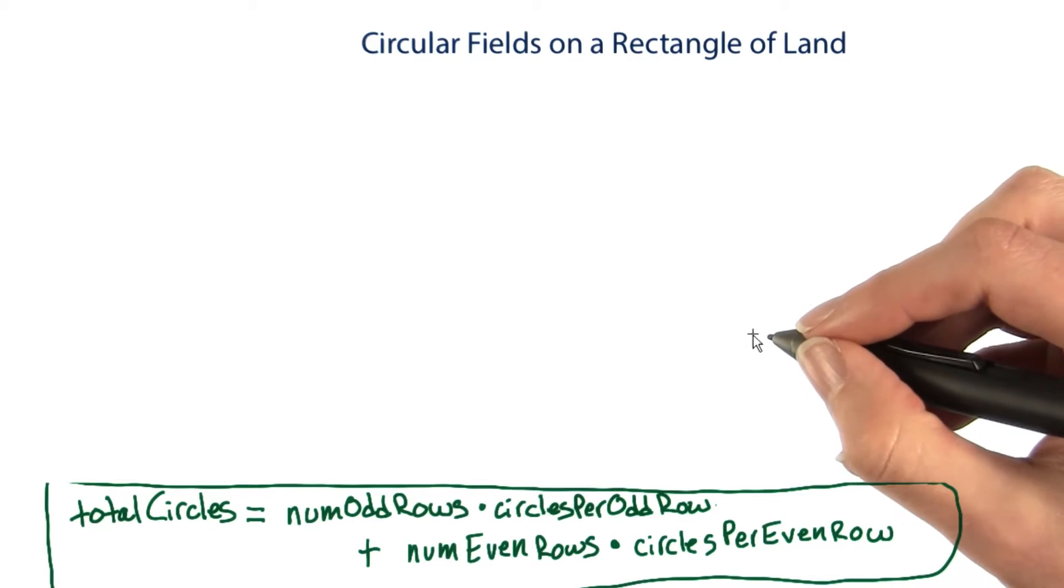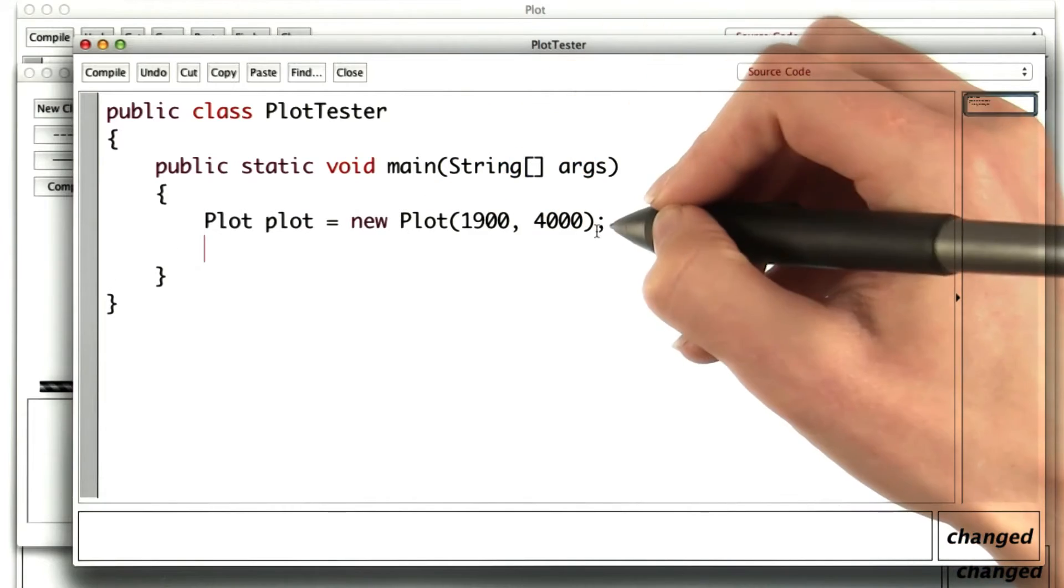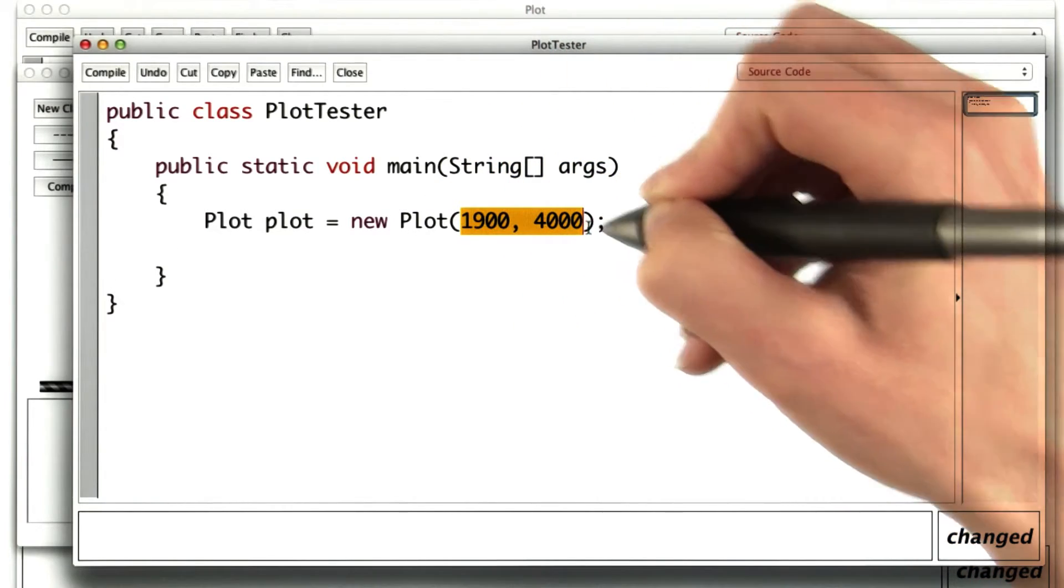So let's start out with what we know first. We know what we want to test. So I'll go into the plot tester and I'll create a new plot of the size that we did the example for.